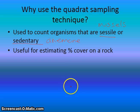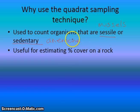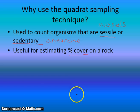We also often use the quadrat for estimating percentage cover — for example, if you're looking at seaweeds.